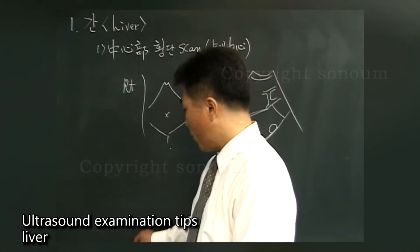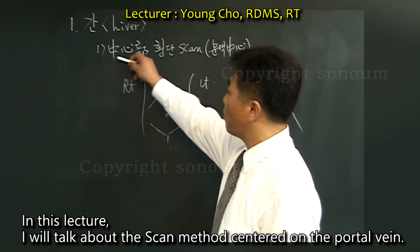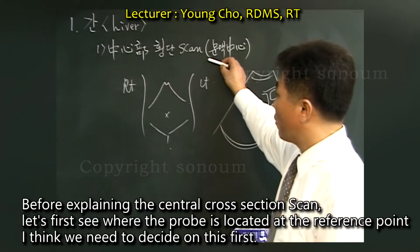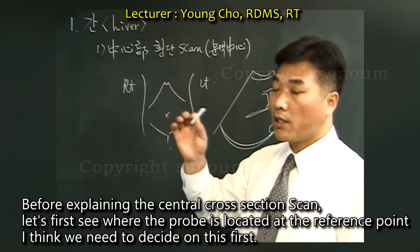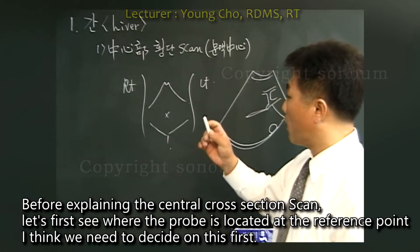Ultrasound Examination Tips: Liver. This is a central transverse scan. In this lecture, I will talk about the scan method centered on the portal vein. Before explaining the central cross-section scan, let's first see where the probe is located at the reference point. I think we need to decide on this first.